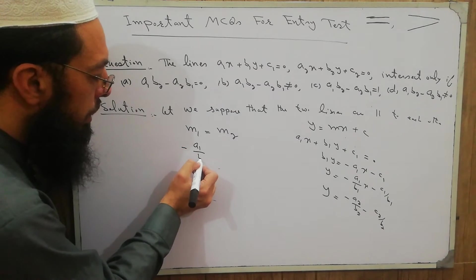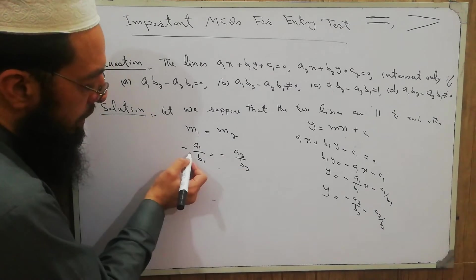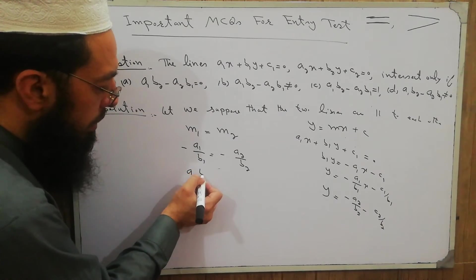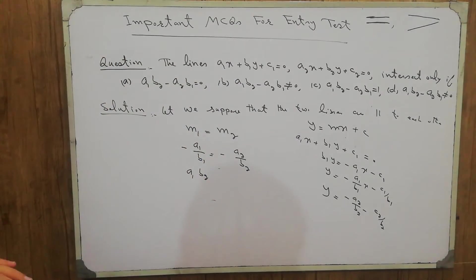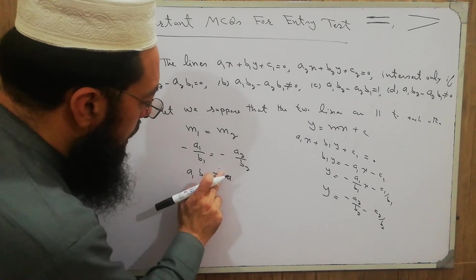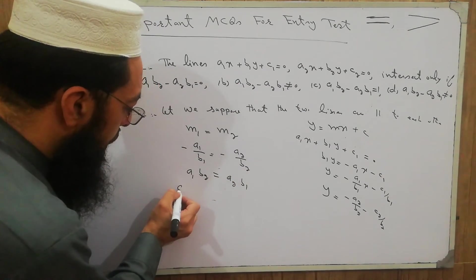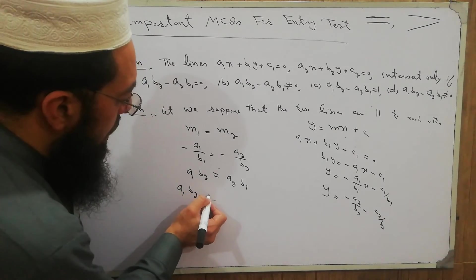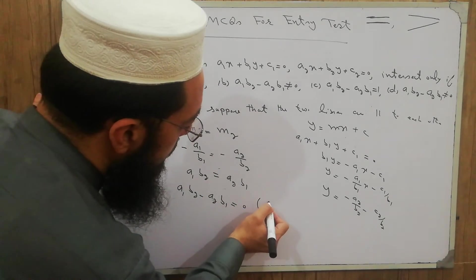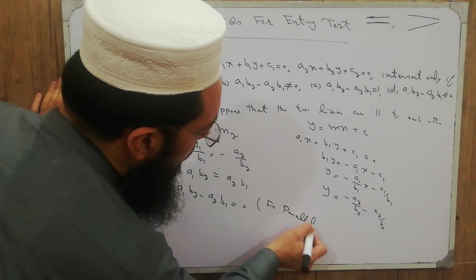Setting the slopes equal: -a1/b1 = -a2/b2. The negatives cancel and cross-multiplying gives a1·b2 = a2·b1, or a1·b2 - a2·b1 = 0. This is the condition for parallel lines.